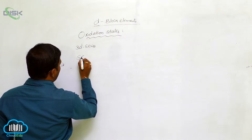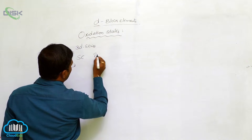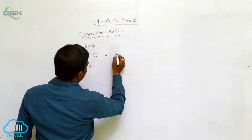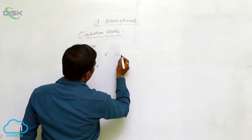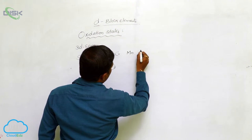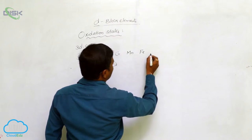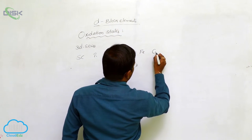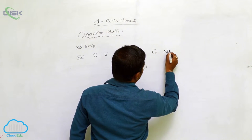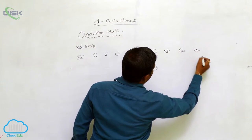Once again, the 3D series elements are: scandium, titanium, vanadium, chromium, manganese, iron (or ferrum), cobalt, nickel, copper, and zinc.